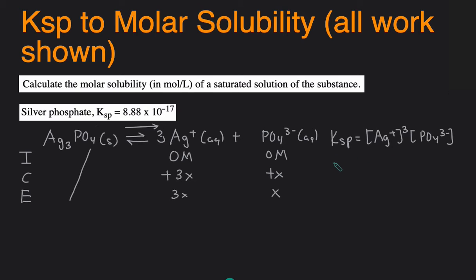Then substitute the numbers in. Ksp is 8.88 times 10 to the negative 17 equals the concentration at E which was 3X. So 3X raised to the third power times the concentration of phosphate which is X. We simplify this and that will give us 27X to the third times X so X to the fourth.